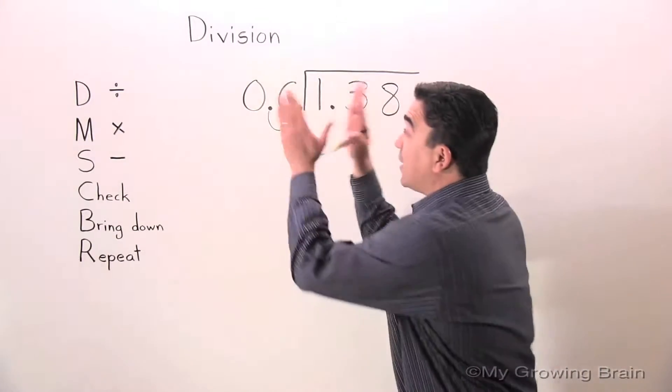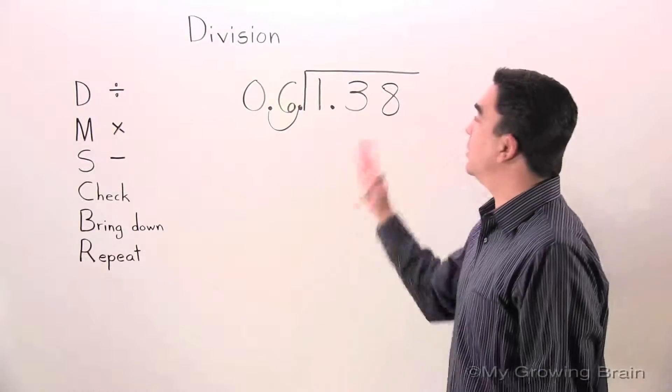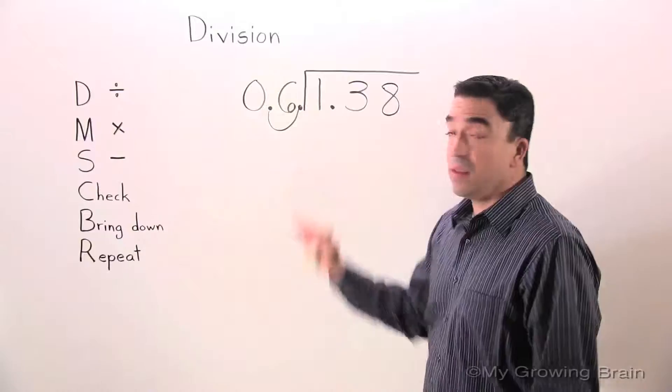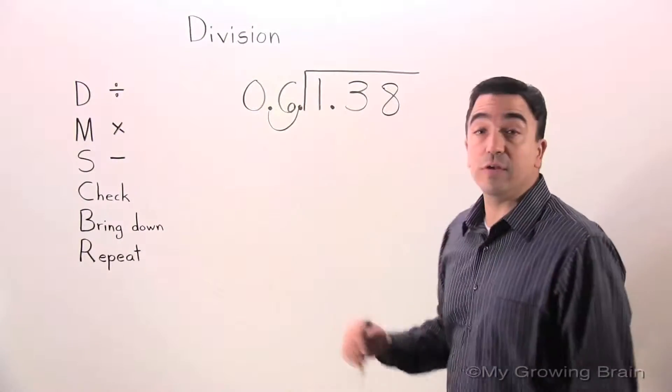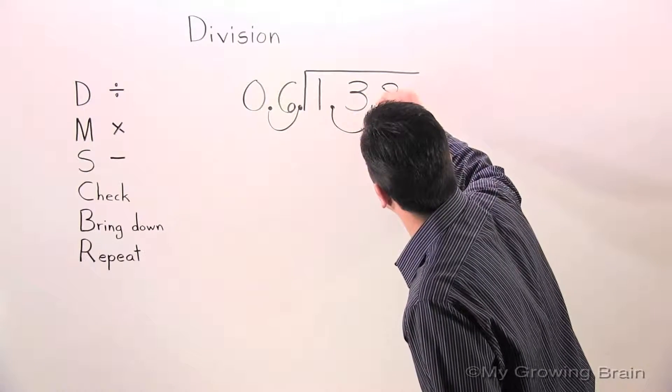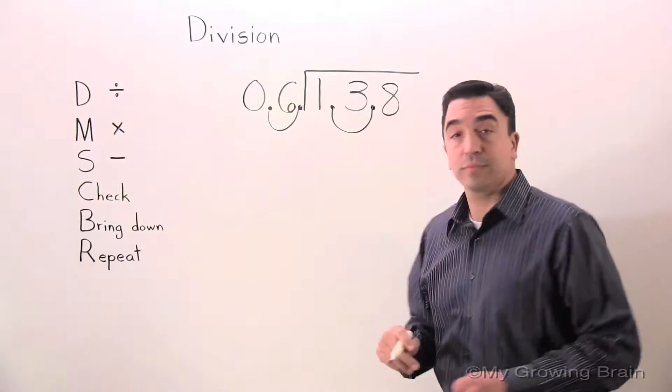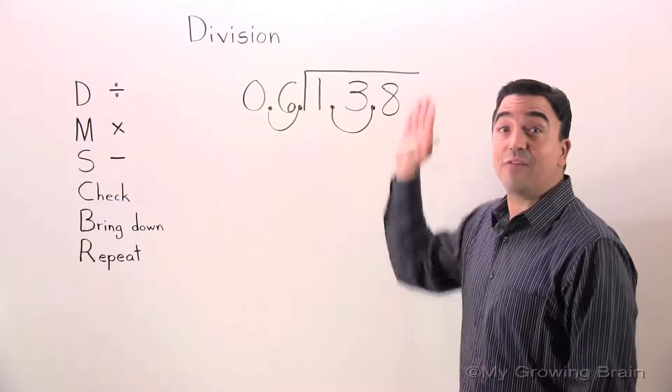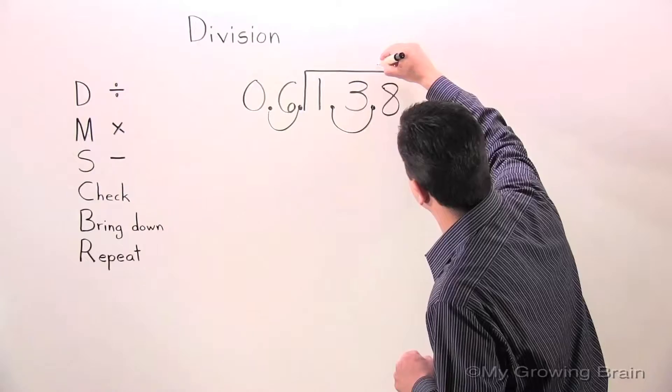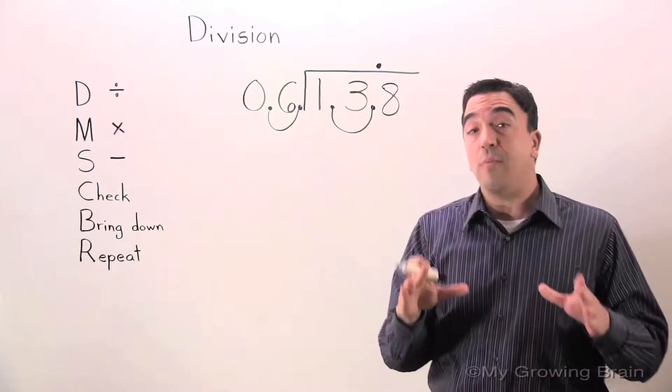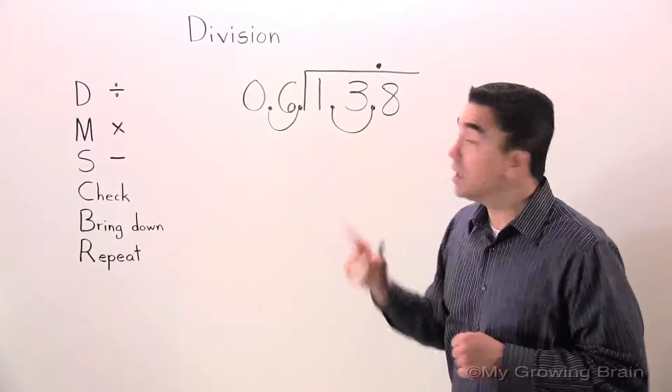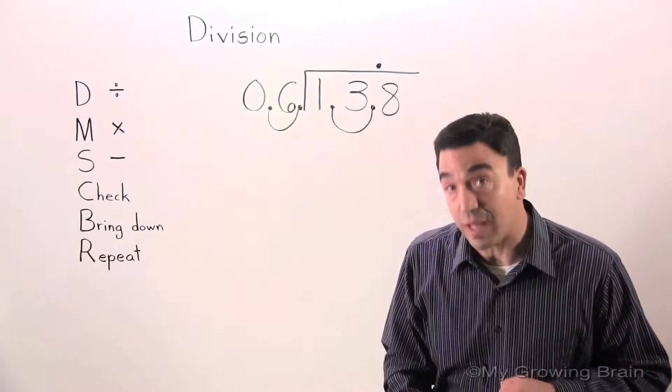However, whatever I do to the divisor, I must do to the dividend. So since I move this over one place, I have to do the same thing in the dividend. Watch. Now I'm going to raise my decimal into the quotient. So my new problem will be 13.8 divided by the whole number six.